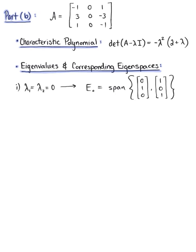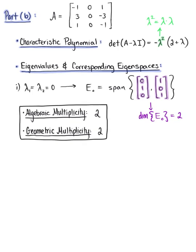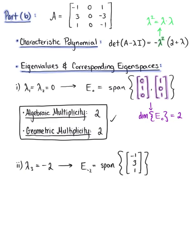We can see that this eigenvalue λ = 0 has an algebraic multiplicity of 2, because the term lambda appears twice in the characteristic polynomial, and it has a geometric multiplicity of 2, because the dimension of eigenspace E sub 0 is equal to 2. Here the algebraic multiplicity equals the geometric multiplicity, so we move on to case 2: eigenvalue lambda sub 3 equals negative 2, with the corresponding eigenspace E sub −2 equal to the span of the vector (−1, 3, 1).